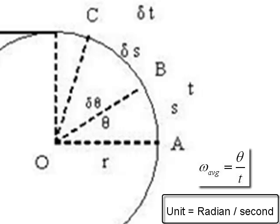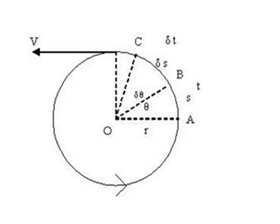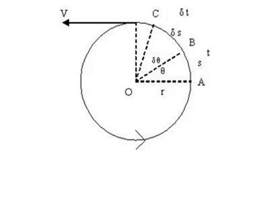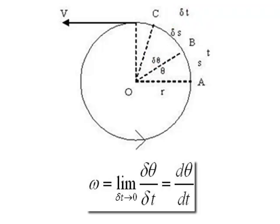Its unit is radian per second. As theta is not a true vector quantity and we consider delta theta as the true angular displacement, we always find instantaneous angular velocity instead of average angular velocity. Consider that very small or infinitesimal displacement delta theta from B to C occurring in time delta T. Then, the instantaneous angular velocity omega is given as the limit of delta theta upon delta T as delta T tends to 0. By definition, this is the time derivative of theta, so it is denoted as d theta by dt.